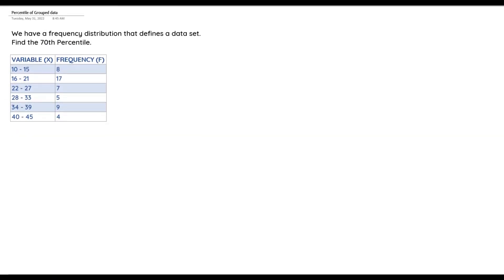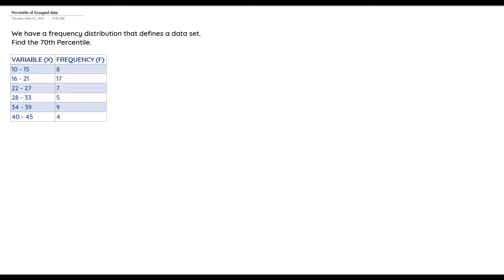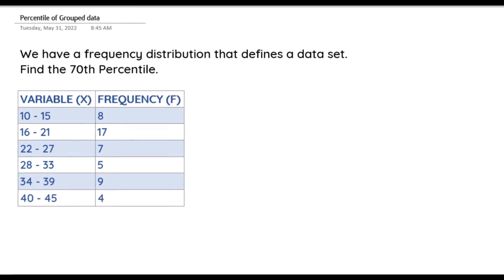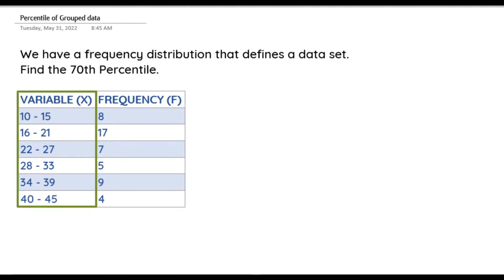In today's video we are going to be learning how to get the 78th percentile of a grouped data — specifically a grouped data based on class. We have a frequency distribution table that defines a data set, and we are supposed to calculate the 78th percentile of this distribution. We have the variable x and its corresponding frequency distribution.